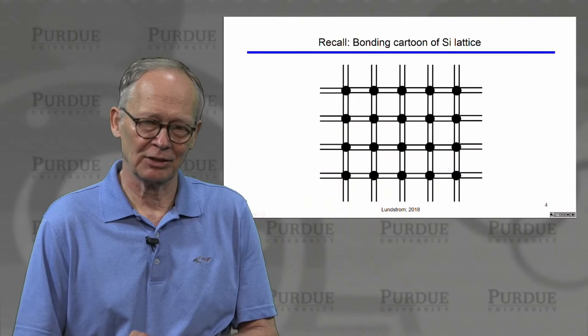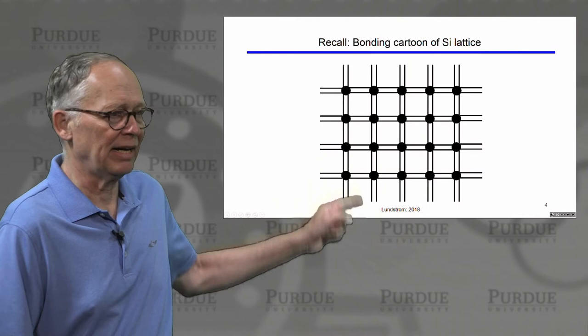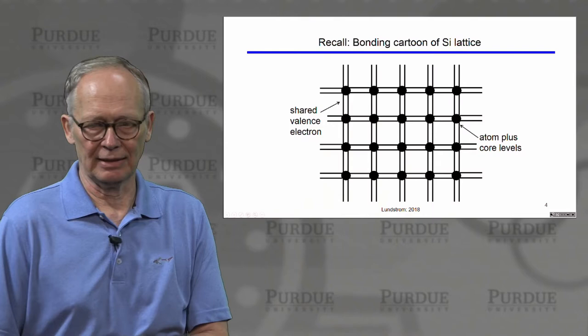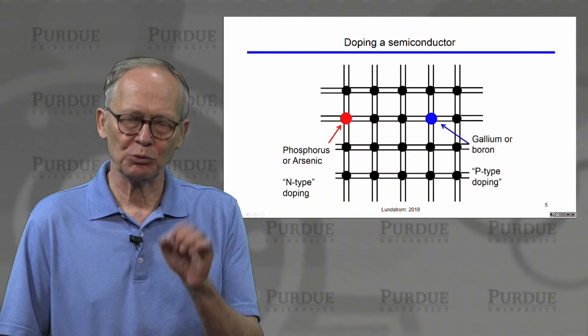Let's talk about how this works. This is our cartoon of the silicon or semiconductor lattice. Each filled circle represents an atom, each line represents a covalent bond, and each atom has four nearest neighbors. We have the shared valence electrons here and the core atoms here.